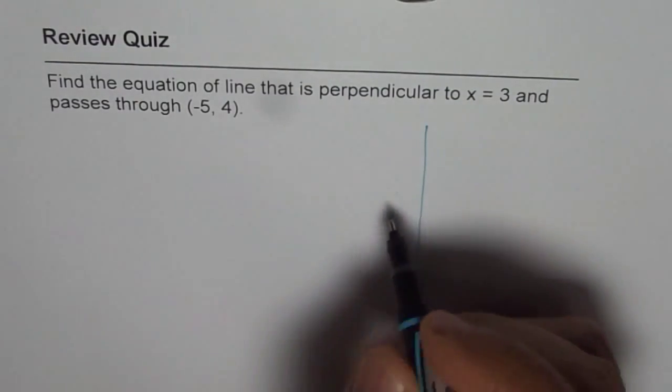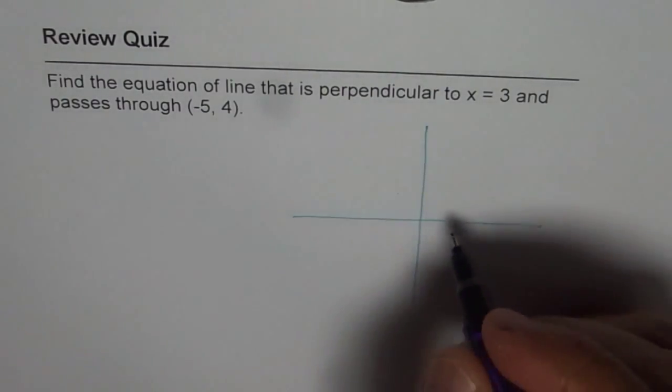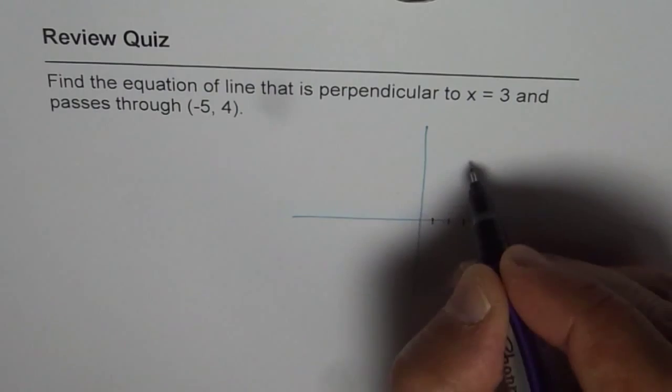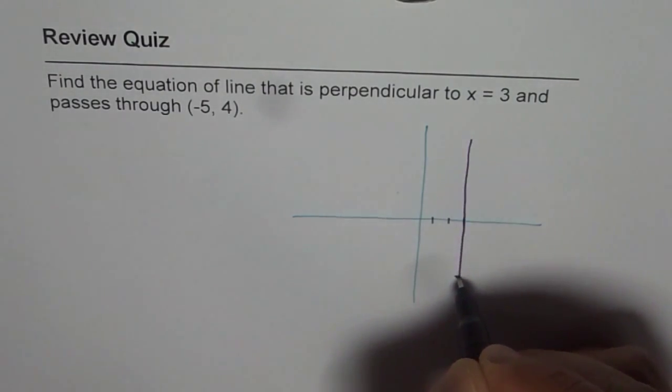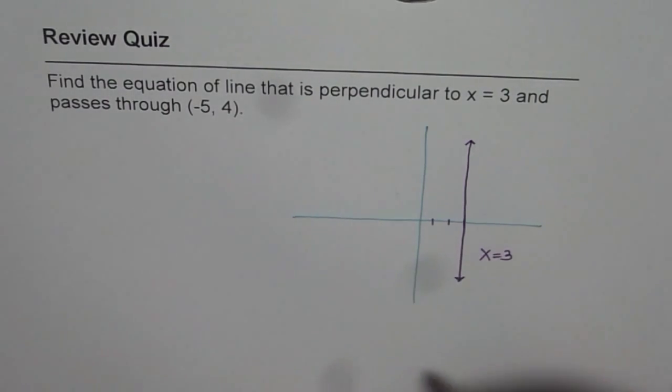Let me sketch to show you what I am trying to say. When we say that x equals 3, that means it is a vertical line which goes through 3, right? A line like this. This line has all the points at x equals 3 and that is how it is defined.